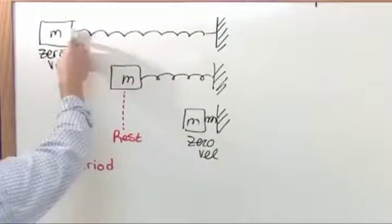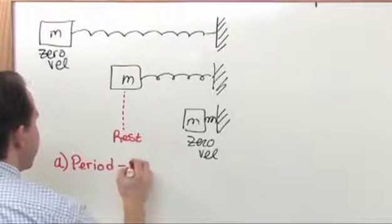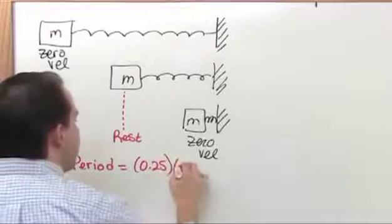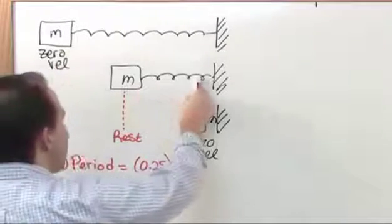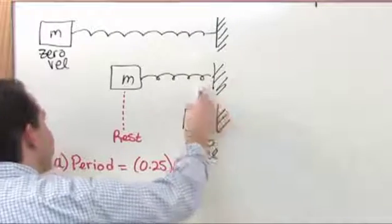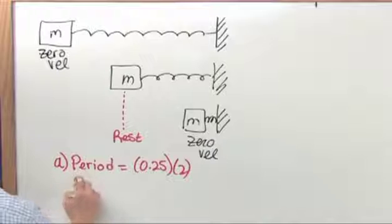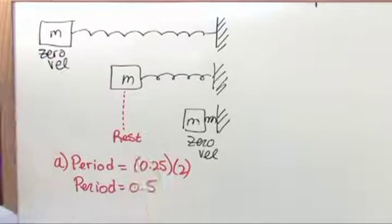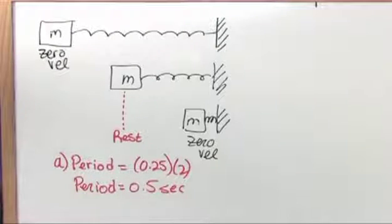It would have to go from here, over to here, and then back to where it started to be one complete cycle. So really, the period is 0.25 times 2, right? Because it says right here, it takes 0.25 to travel from one point of zero velocity to the next. But for one period, it has to go all the way back to the beginning again, so we have to multiply by two. So the period is 0.5, and what's the unit? It's seconds. That's how long it takes for one cycle.